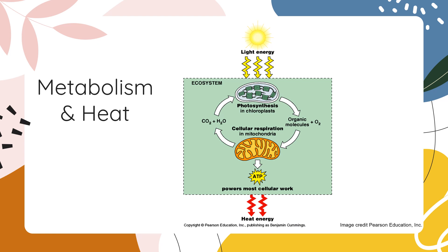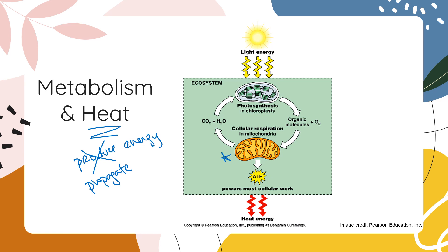An interesting side effect of all these chemical reactions happening is the propagation of heat. Be careful — don't say that we produce heat energy, because we know that energy can neither be created nor destroyed. A better word is propagate. Energy is released during chemical reactions, especially during cellular respiration. As endotherms — organisms that maintain an internal body temperature — we take advantage of cellular respiration and the heat energy that is propagated to keep us warm. Kind of warm.